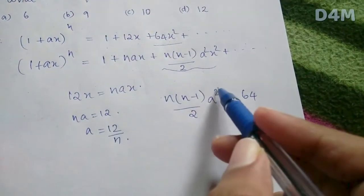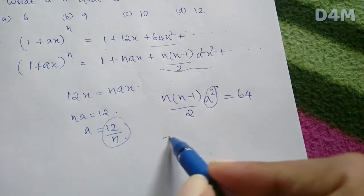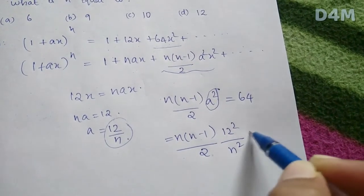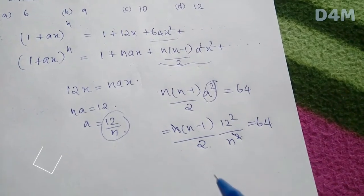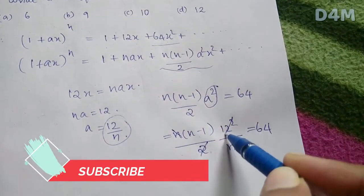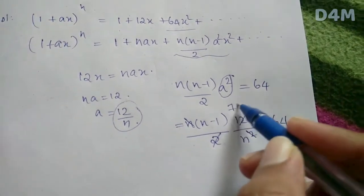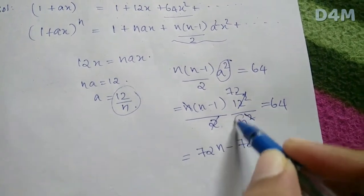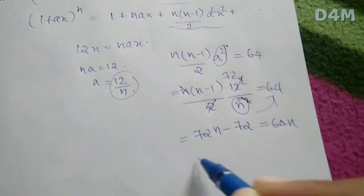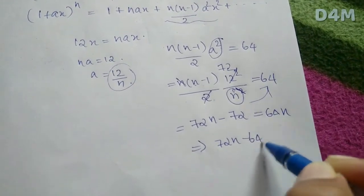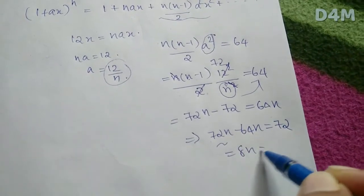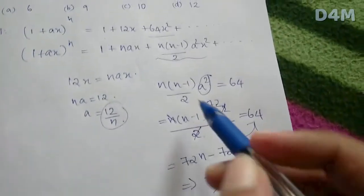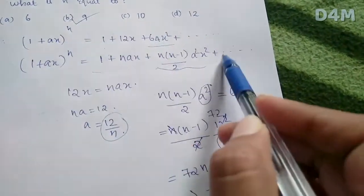Substituting a = 12/n: n(n-1)/2 · (144/n²) = 64. Simplifying: 72(n-1)/n = 64, giving 72n - 72 = 64n, so 8n = 72, therefore n = 72/8 = 9. We have n = 9.